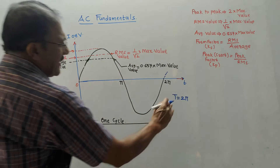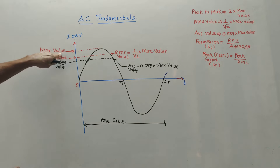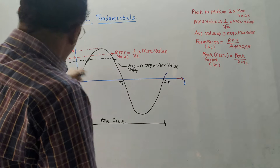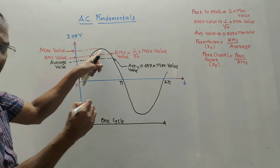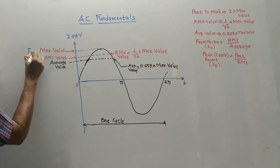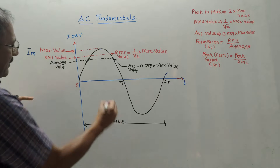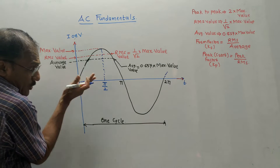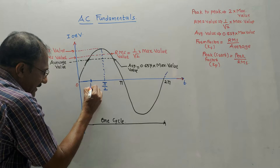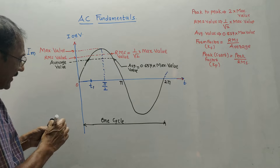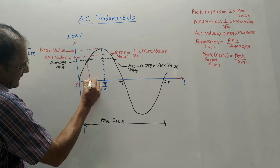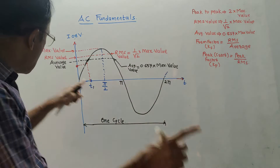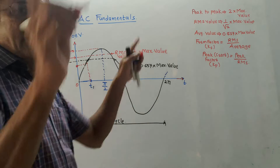There are different terms related to this graph. The maximum value, for a current graph, is denoted by Im; for voltage it is Vm. This maximum value occurs at time π/2. If I consider any instant t1 between 0 and π/2 and mark the corresponding amplitude, that value at the particular instant t1 is called the instantaneous value — instantaneous current if it is current, instantaneous voltage if it is voltage.